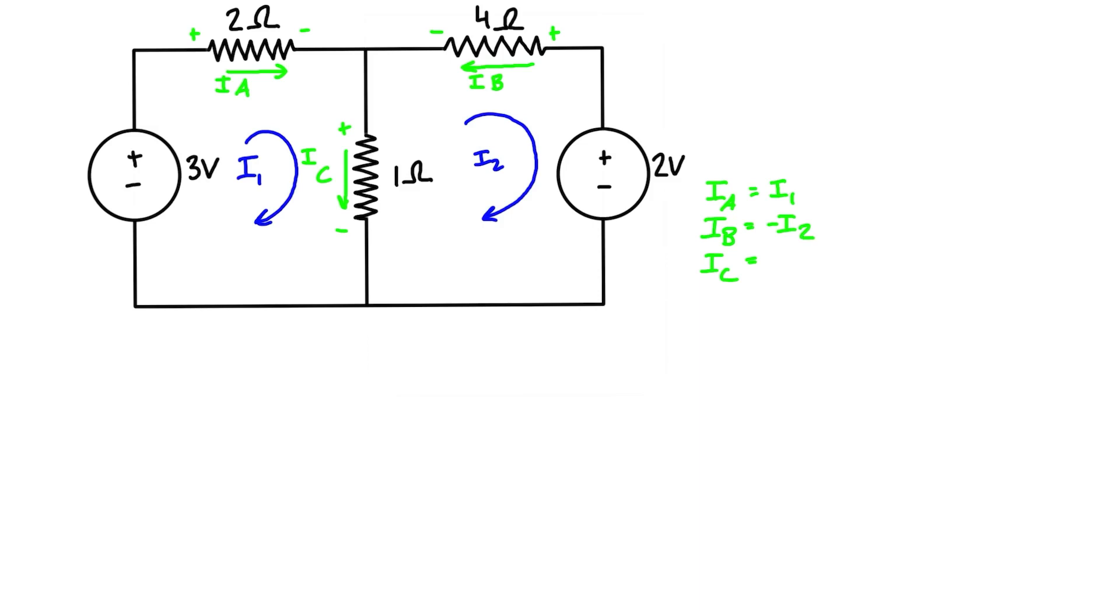And then for ic, we have i1 going this way and i2 going this way. So considering that ic is going down, it's going to be the net of i1 and i2, and we're just basically going to have i1 minus i2. Now we're going to do KVL for each loop. We'll start with loop number one on the left hand side.